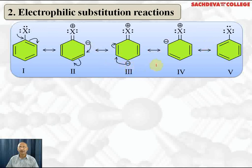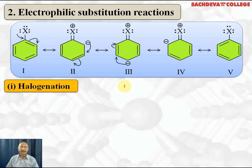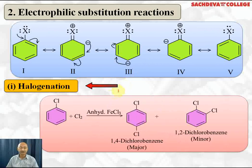These resonating structures show that electron density is maximum at ortho and para positions; therefore the electrophile will attack at ortho and para positions in halobenzene. For example, in halogenation: chlorobenzene with Cl₂ in the presence of anhydrous FeCl₃ or AlCl₃ gives 1,4-dichlorobenzene (para-dichlorobenzene) as the major product and 1,2-dichlorobenzene as the minor product.